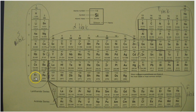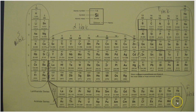Down to francium, which is 7s1, radium is 7s2. Now we go down to actinium, which is 5f1, and then all the way down the F block to nobelium, which is 5f14. Back up to lawrencium, and this is 6d1 — then you can finish out the pattern like so.